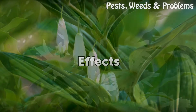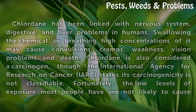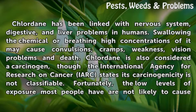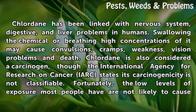Chlordane has been linked with nervous system, digestive, and liver problems in humans. Swallowing the chemical or breathing high concentrations of it may cause convulsions, cramps, weakness, vision problems, and death.